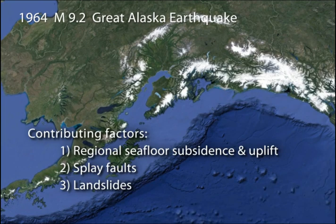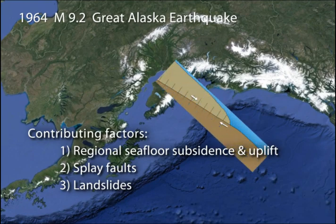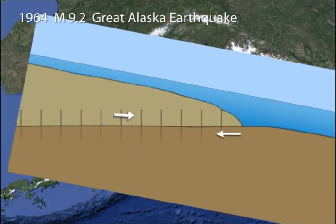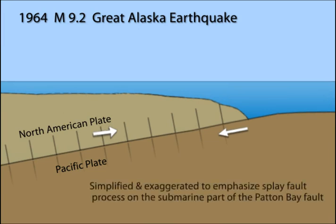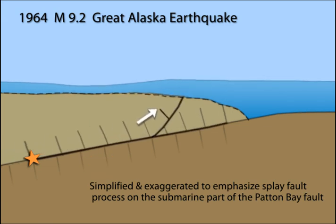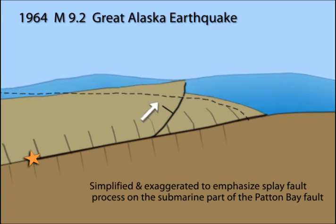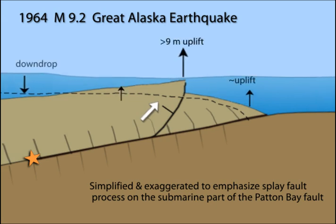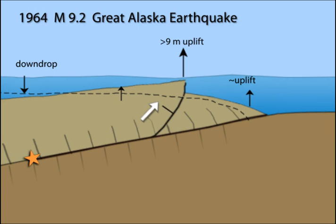There were three contributing factors to the devastation that ensued. With few seismometers in the region in 1964, the progression of the rupture relative to the splay faults is unknown. For simplicity, we will show plate boundary displacement branching into splay faults. During this earthquake, displacement started on the plate boundary megathrust fault, producing 2 to 4 meters of regional seafloor uplift and subsidence. However, most of the fault offset ramped up to the seafloor on splay faults like the Patton Bay Fault, which was displaced 9 meters.